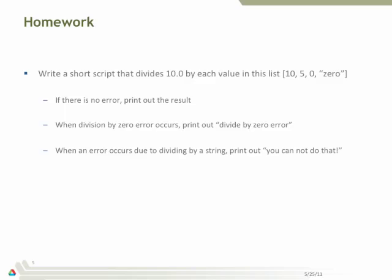And if there's no error, print out the result. If there is a division by zero, print out divide by zero error. And if you try to divide by a string, print out you cannot do that.